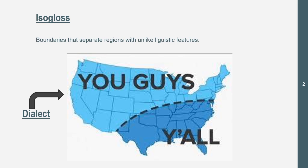A dialect can also be written. In Britain and in the United States, you still say 'theater,' of course with different accents, but it's still theater. However, it is written differently — that is also a dialect, and you can show that with an isogloss.